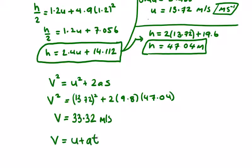...we're going to get v equals 13.72 plus 9.8 times 2, which is 19.6 plus 13.72, which is also 33.32 meters per second.